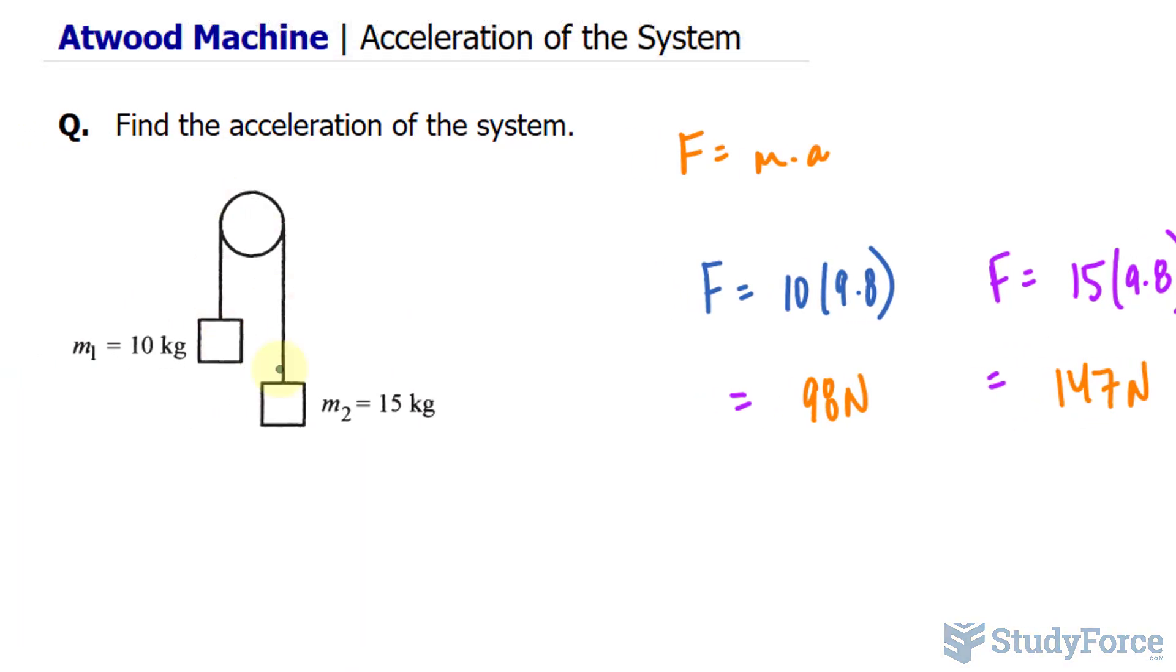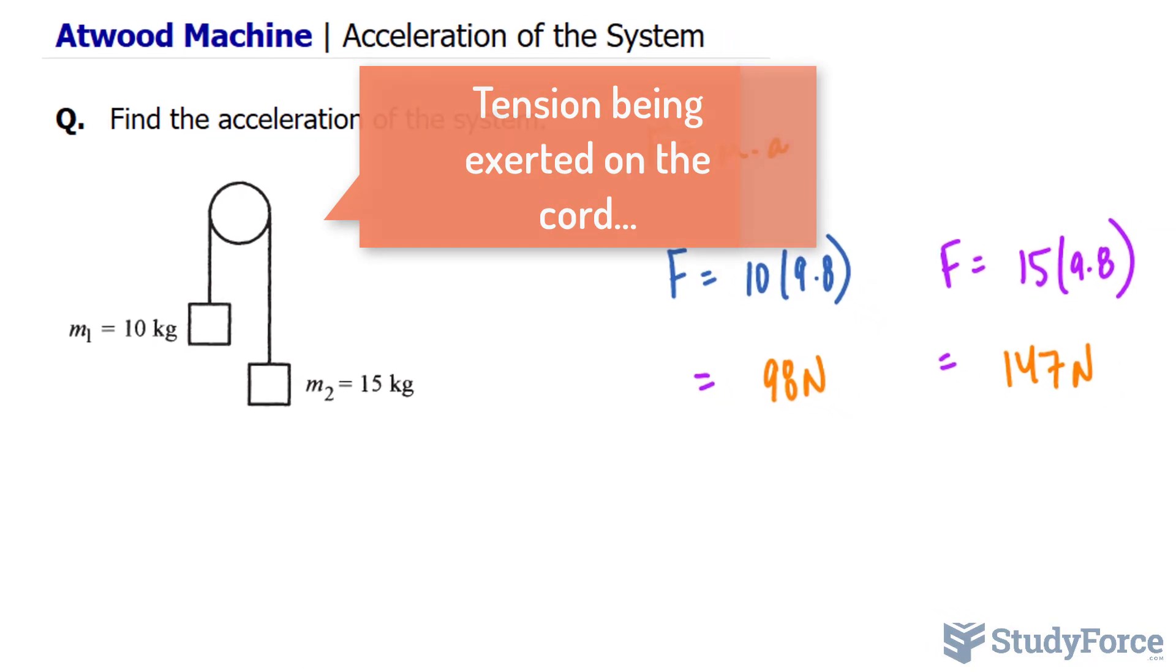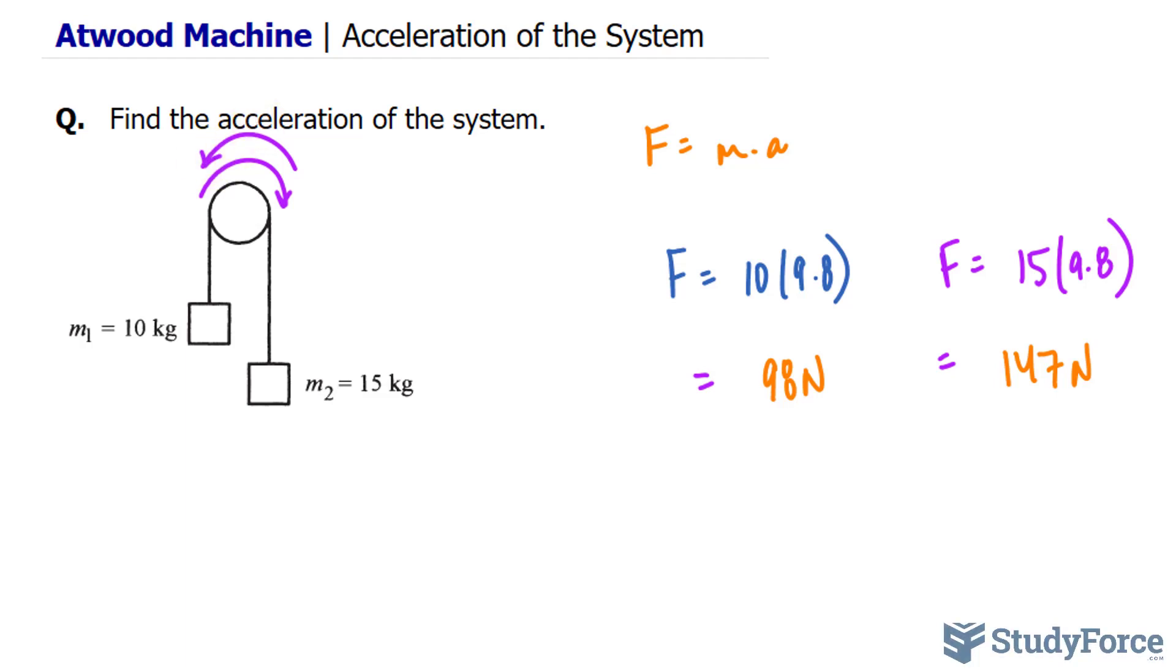Now because these two masses are connected via a cord, they have one acceleration and one tension. At this point, you need to make the assumption as to where the mass is going. Is it going clockwise or counterclockwise? I'll make the assumption that it is going clockwise, and based on your assumption, the next set of formulas that you make will vary.